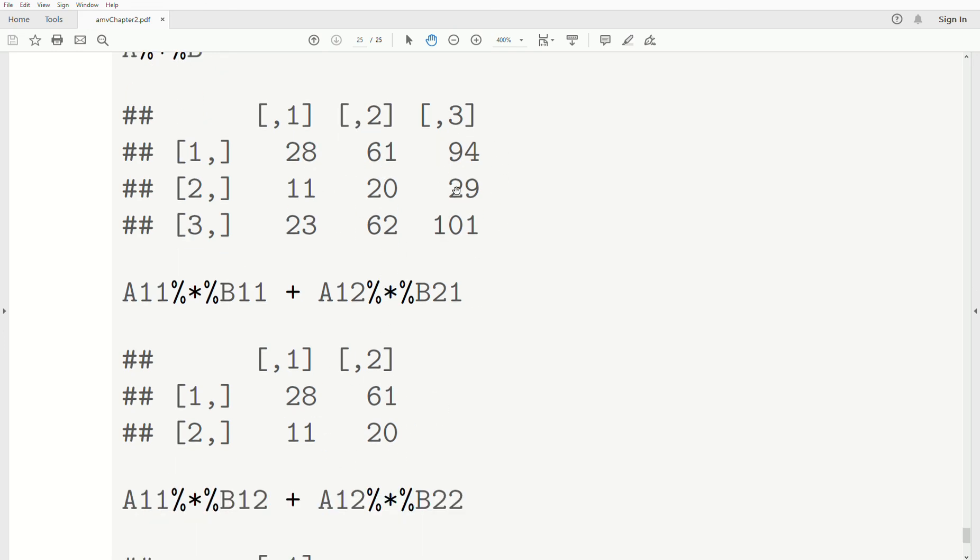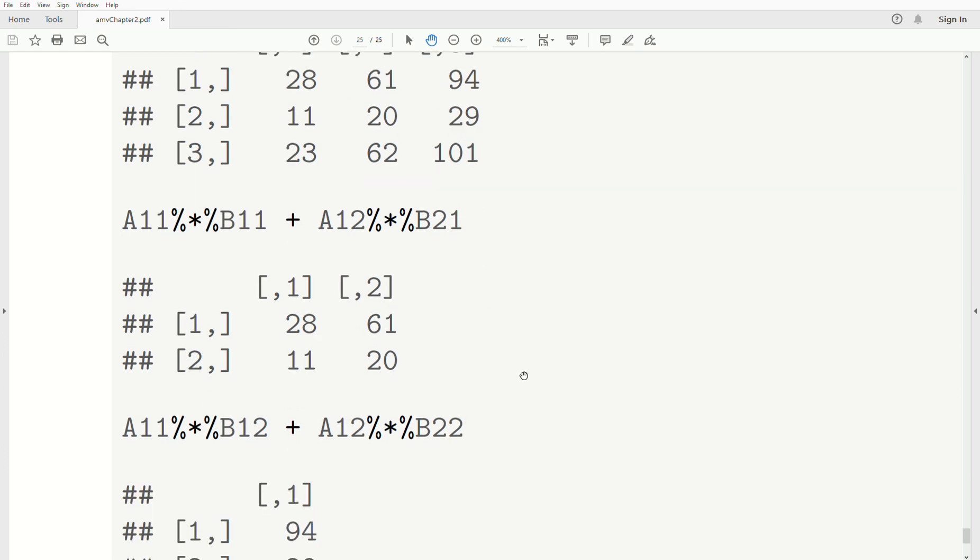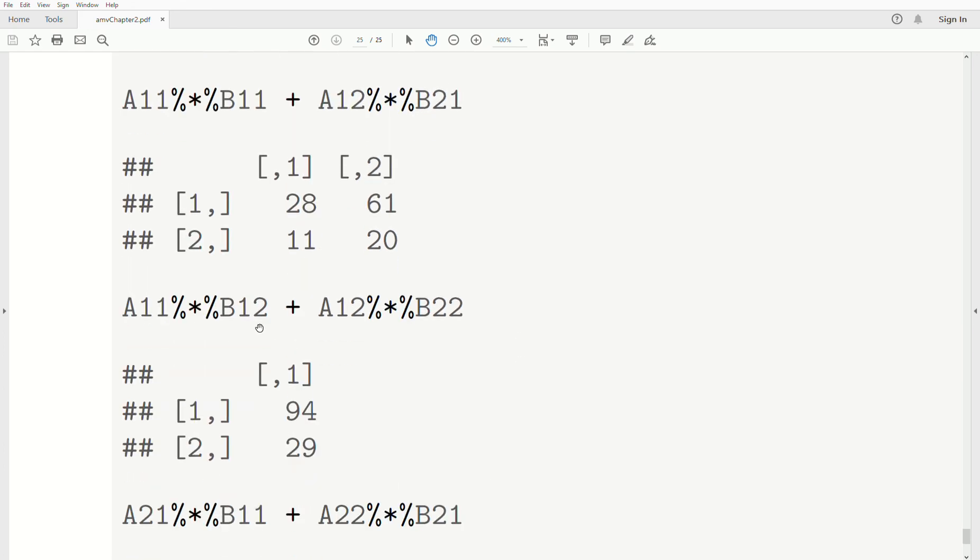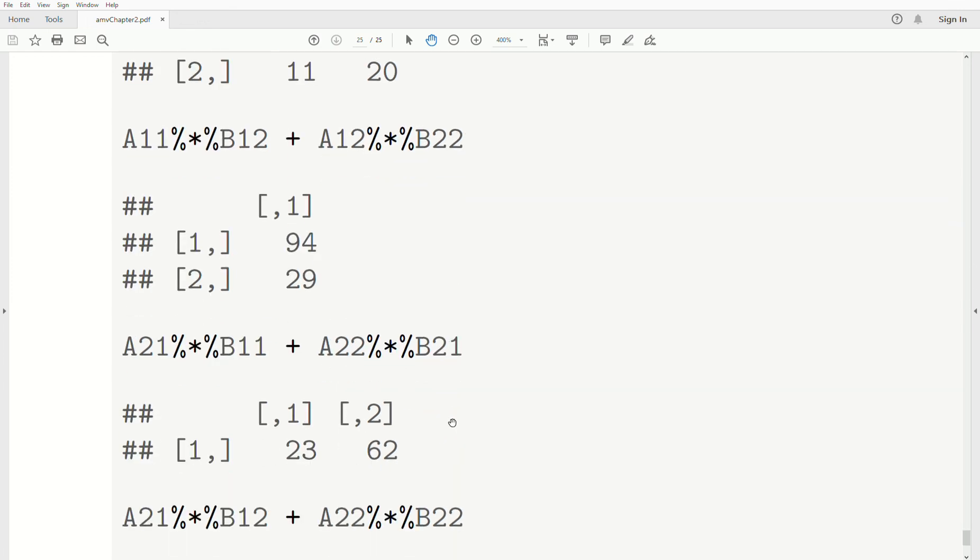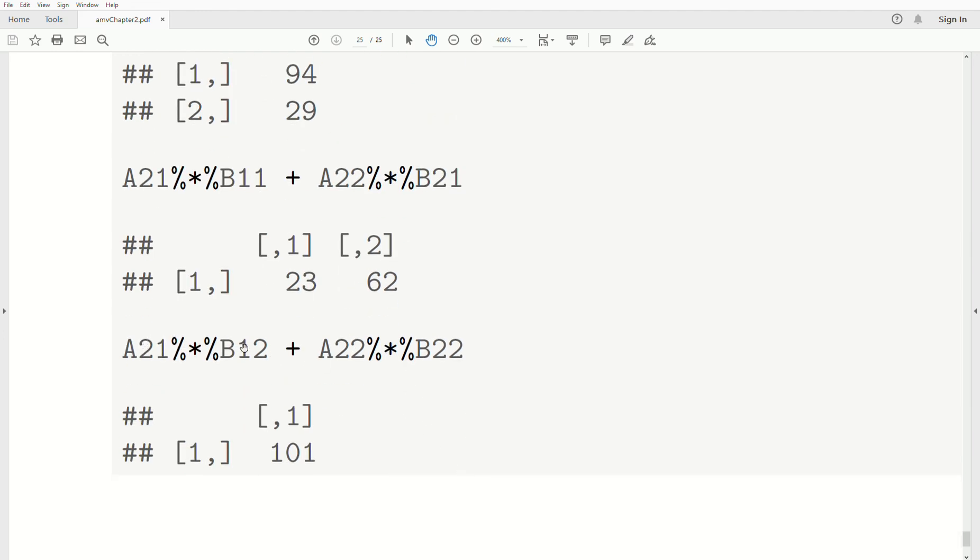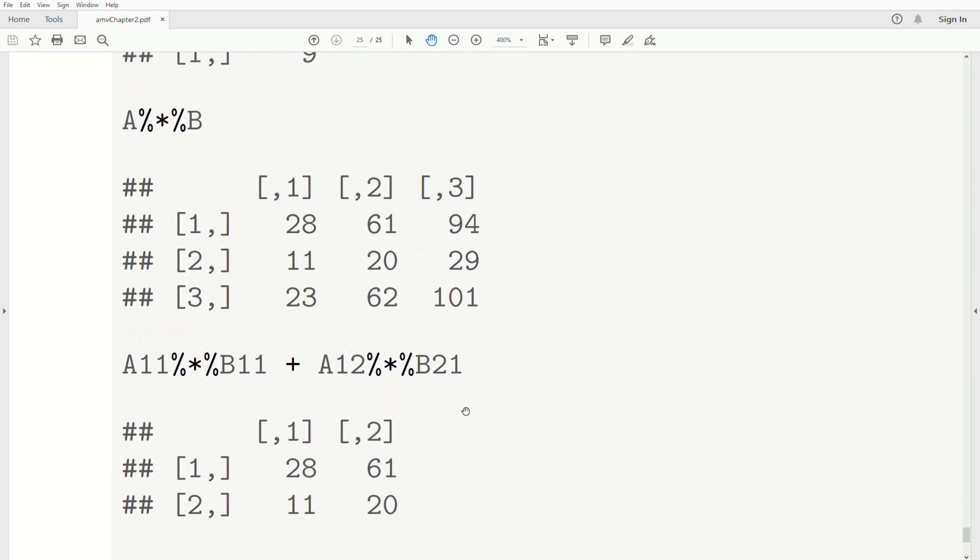That's this submatrix of the matrix product. So we do get it back. And then similarly, if we look at this column, 94 and 29, and we do this matrix product according to the formula above, we get that little submatrix. And then very similar for this submatrix. And then the last, we do this matrix product according to the formula. And we get 101, which is this piece of the matrix.